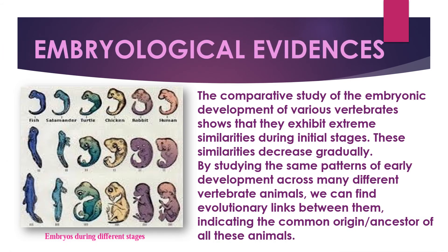Embryological evidence: if you look at fish, salamander, tortoise, chicken, rabbit, and human embryos, in their initial stages they look very similar. But as they grow, the similarities decrease and they start looking different. This proves there is a same developmental pattern among these vertebrate animals, indicating evolutionary links and a common ancestor. This is called embryological evidence.